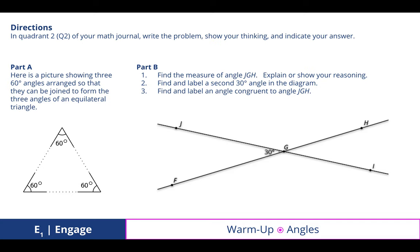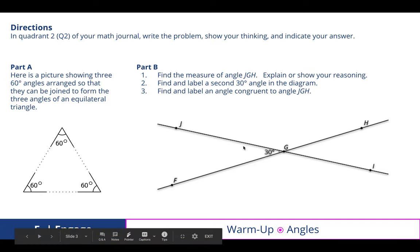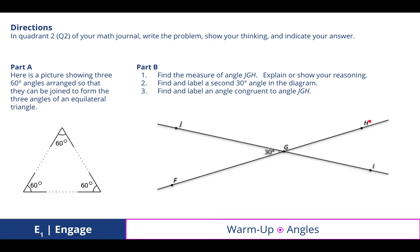For part B, find the measure of angle JGH. Explain or show your reasoning. Again, if we know that the straight line FGH is 180 degrees, then we can subtract that 30 degrees to get 150 for JGH.